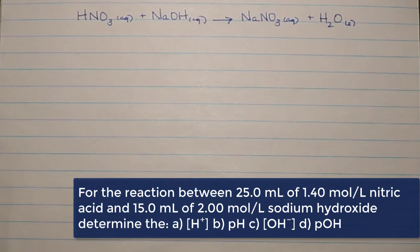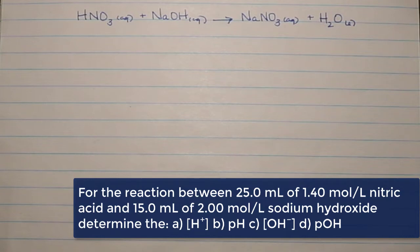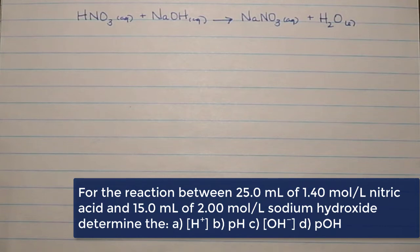If one of the acid or base is left over, whatever remains will impact the pH of the solution. The scenario here involves 25 mL of 1.40 mol/L nitric acid added to a beaker containing 15 mL of 2 mol/L sodium hydroxide. The question asks whether the solution is acidic or basic, which ion contributes to this, the concentration of that ion, and ultimately the pOH, pH, and concentrations of both the hydrogen and hydroxide ions.